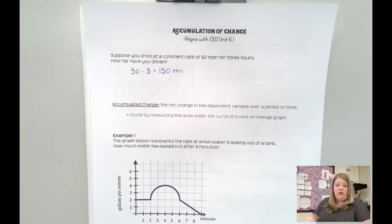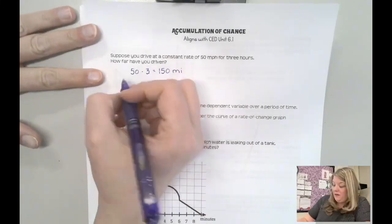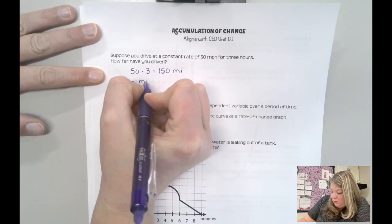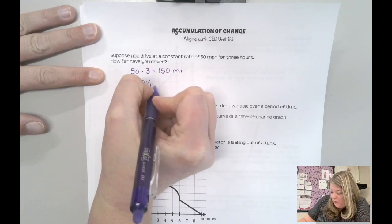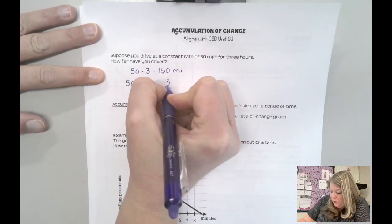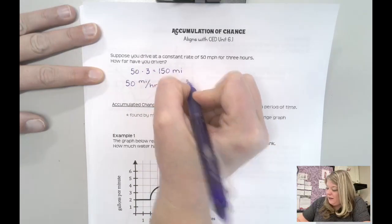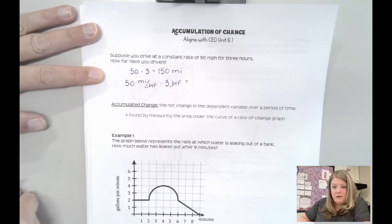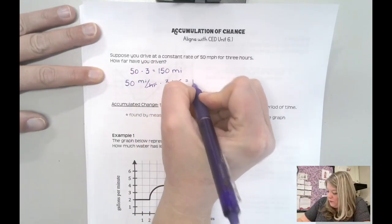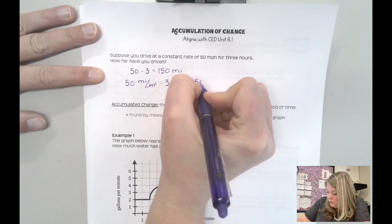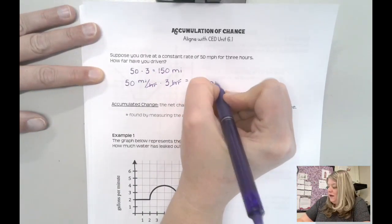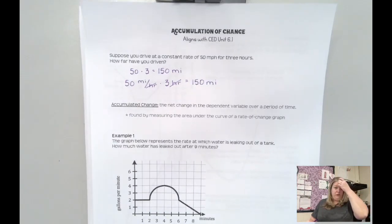Some of you might get complex enough to say, all right, if I go 50 miles per hour and I multiply by three hours, then my hours cancel, and that's why my final unit is in miles, because 50 times 3 is 150. 50 miles per hour times hours would cancel out the hours, so it would be 150 miles again. Either way, you've got the right idea there.